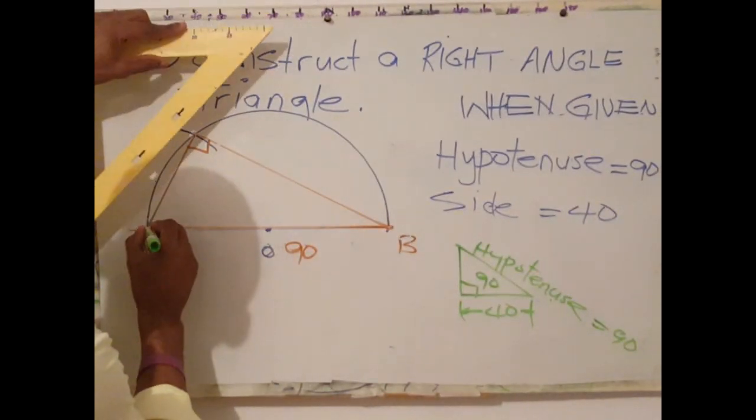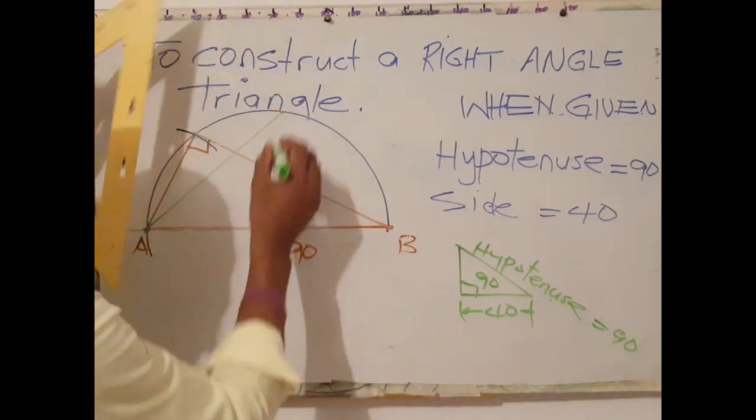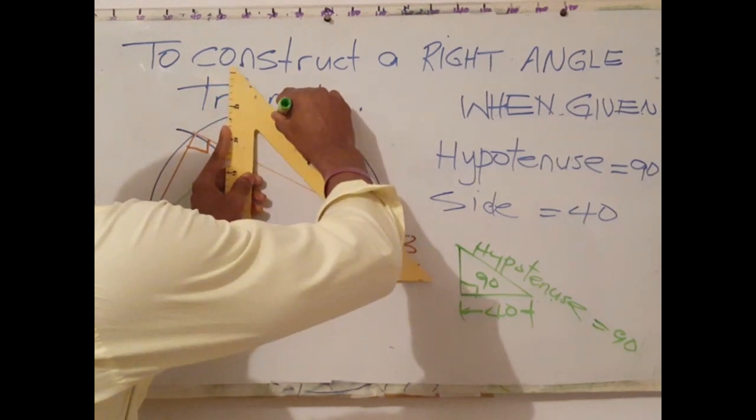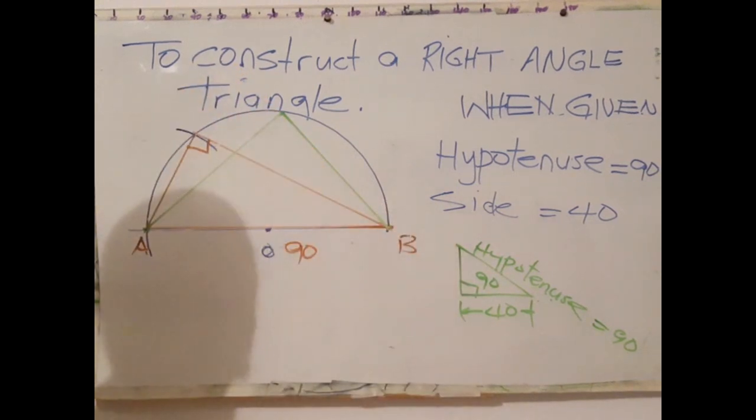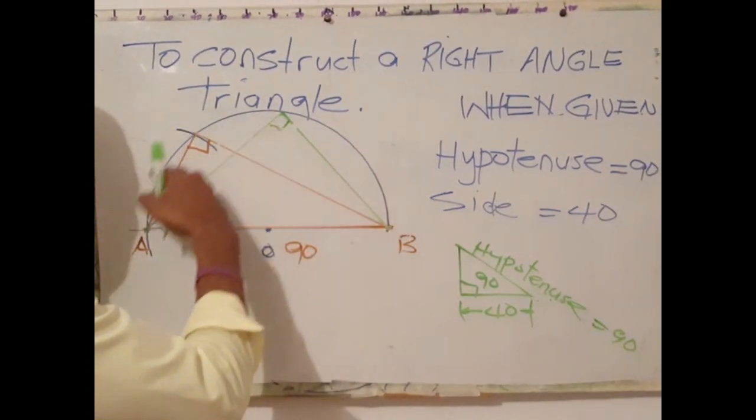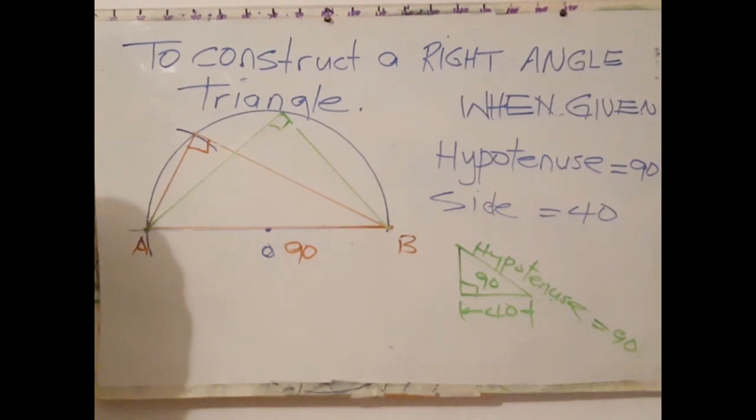Take for example here. Using here as center, and I extend my line to this point. And I go here. See? This is 90. So anywhere in the circumference that you use, as long as the diameter is the base, it will be 90 degrees.